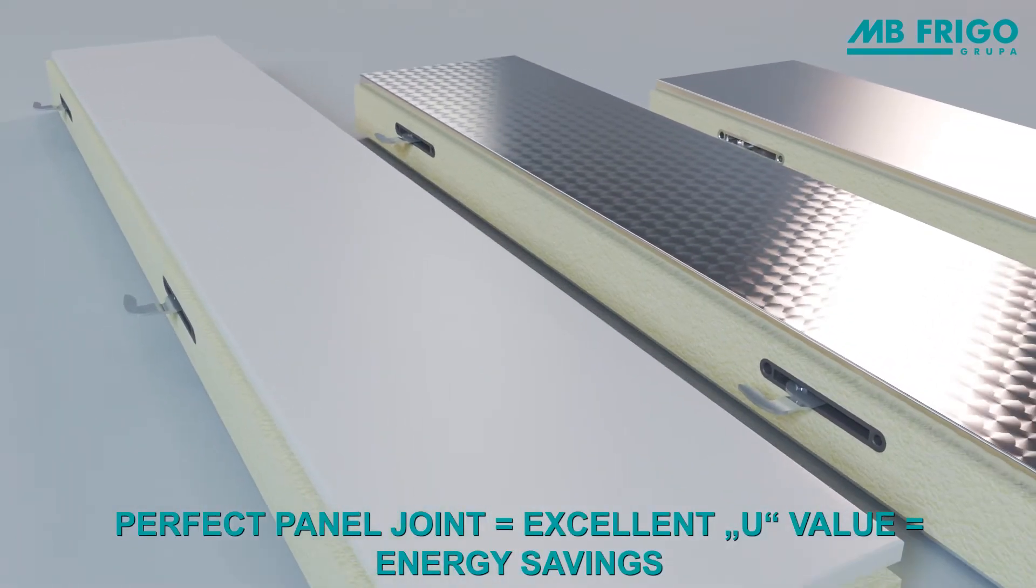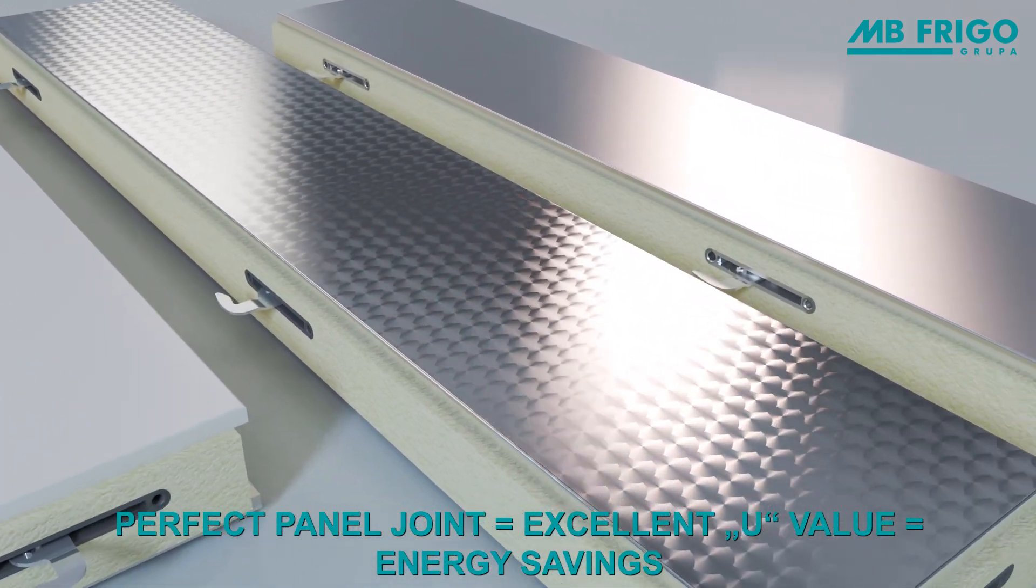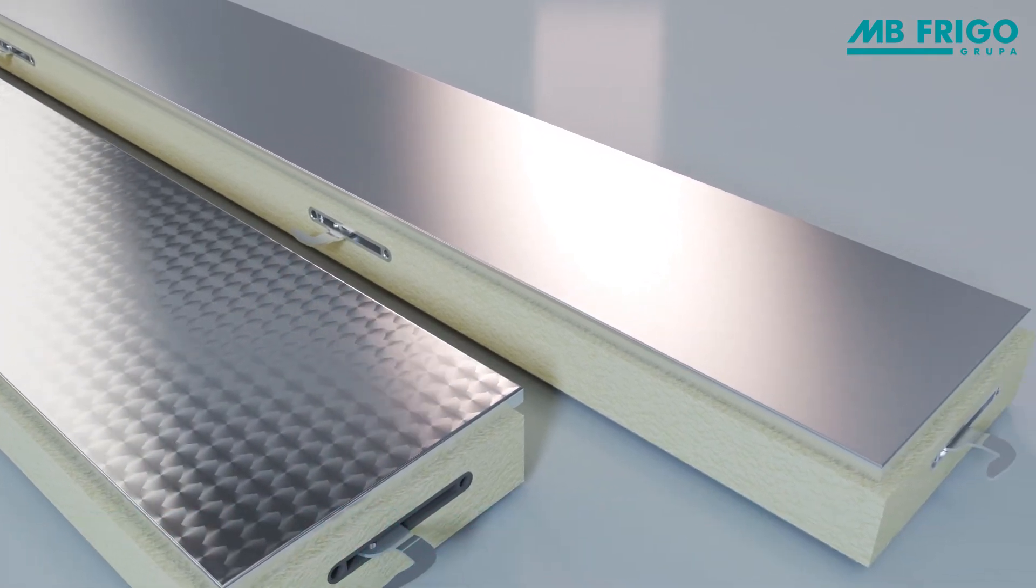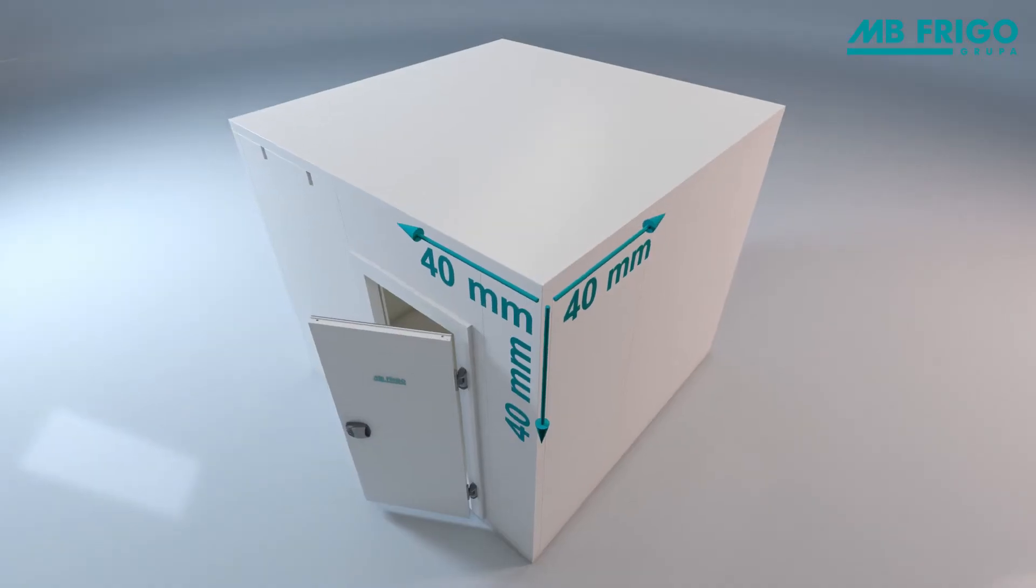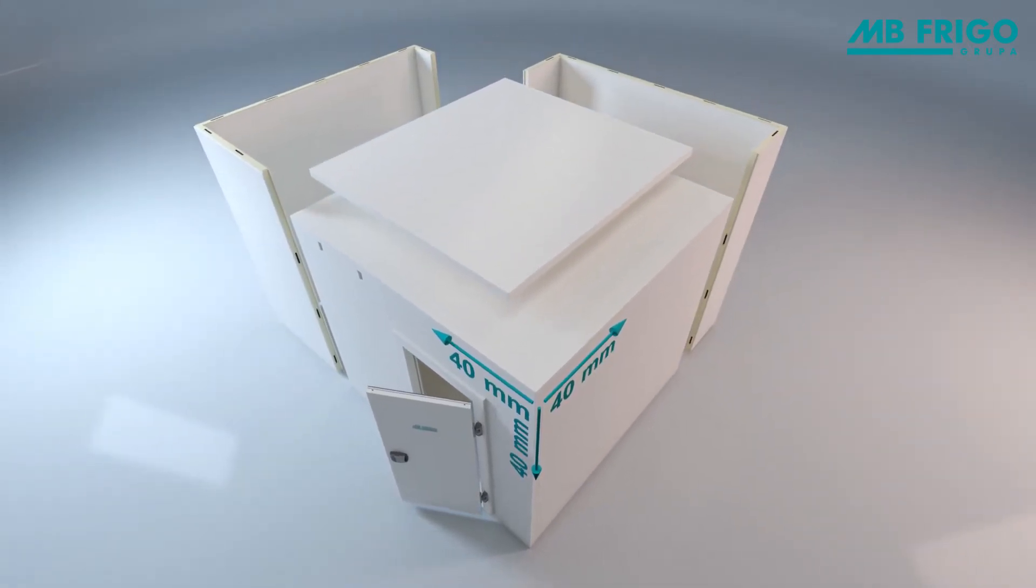The room can be lined inside and out with plain or circle polished stainless steel. MB Frigo cold rooms are made in size increments of just 40 millimeters on every axis, which makes it easy to adjust the rooms to practically every space.